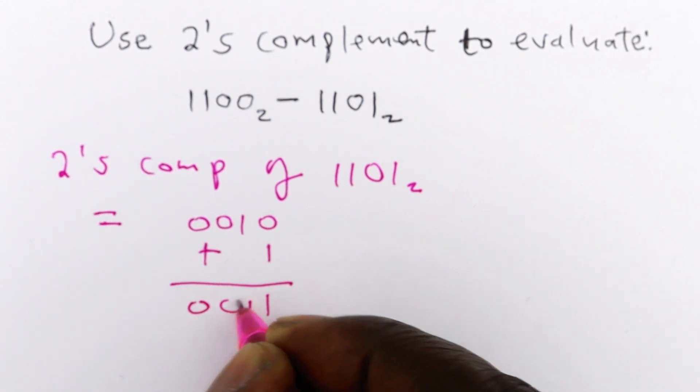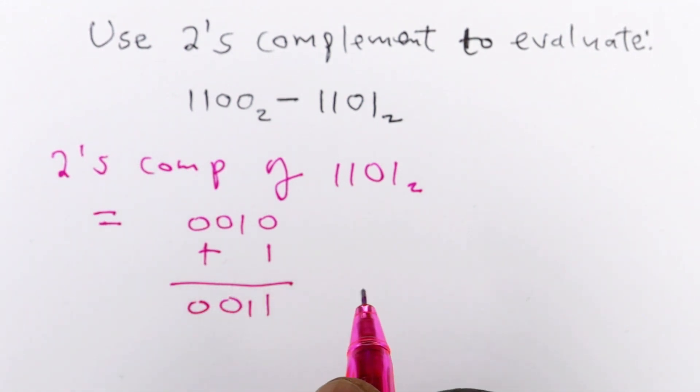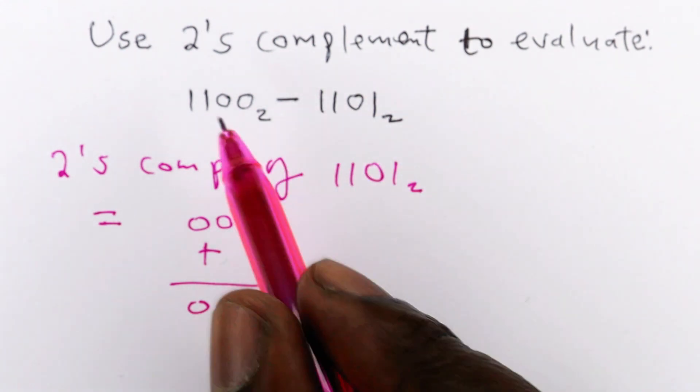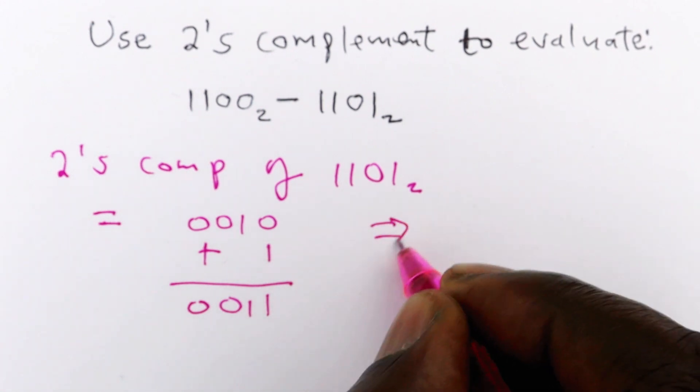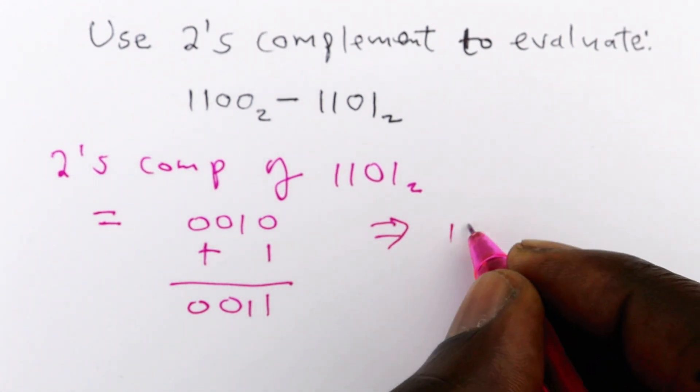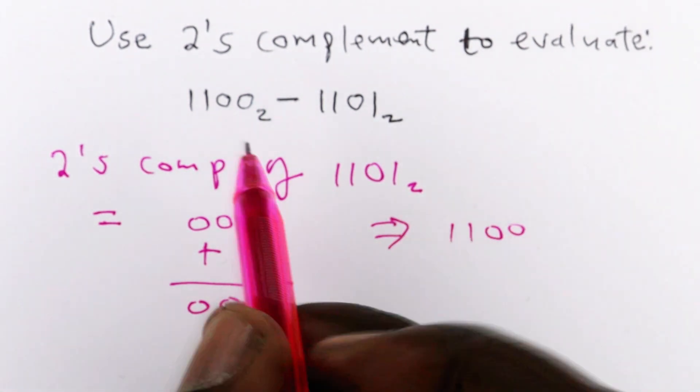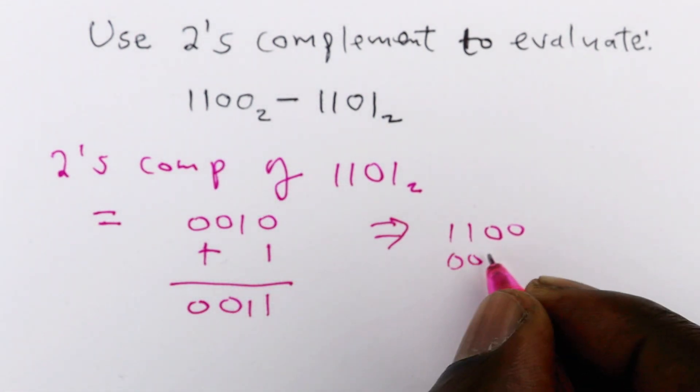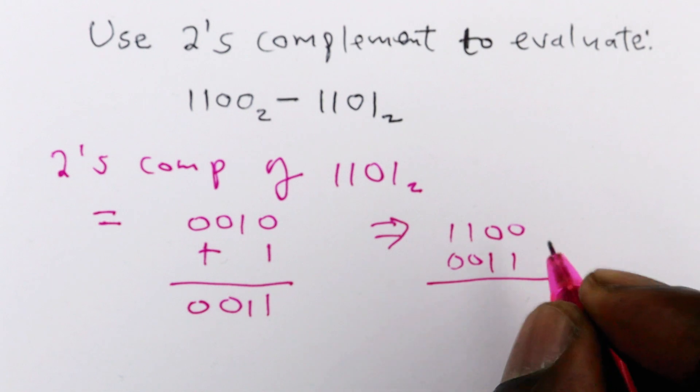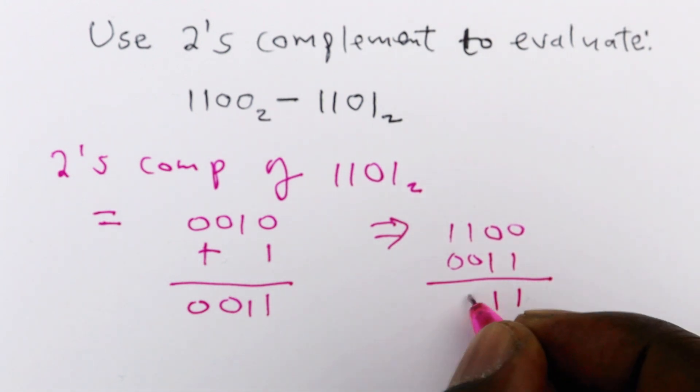That will be 0011. So the next step is to add this 2's complement of the number you are subtracting to the number that you are subtracting from. So we are going to have 1100, this number here. Then we add that 2's complement to it. That will be 1111.